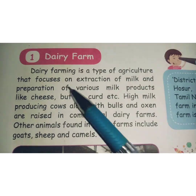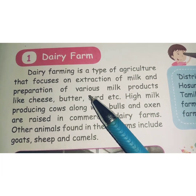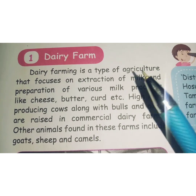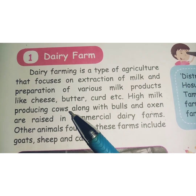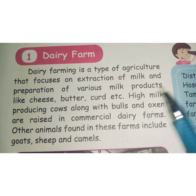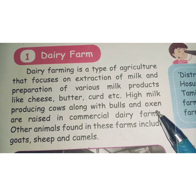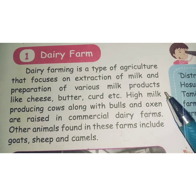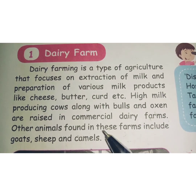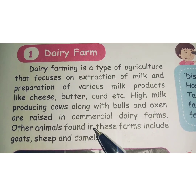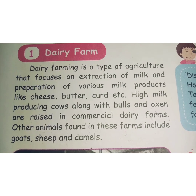Next we have dairy farm. Dairy farming is a type of agriculture that focuses on extraction of milk and preparation of various milk products such as cheese, butter, and curd. High milk-producing cows along with bulls and oxen are raised in commercial dairy farms. Other animals found in these farms include goats, sheep, and camels.